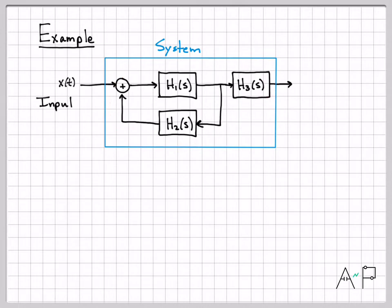The input to the system, x of t, is what we would call the input signal. So anything that goes into a box we call an input signal, and we almost always use an x to represent that. So that's just our convention.